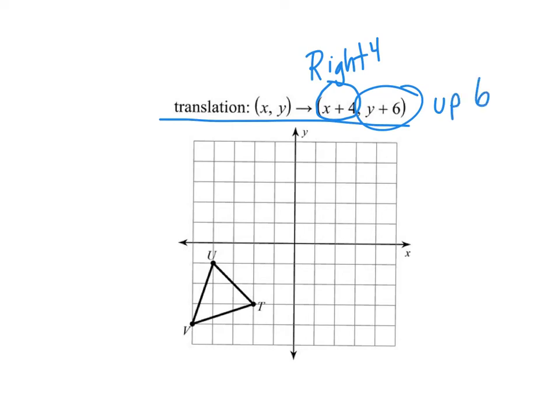So again, each point, we're going to go right 4 and up 6. So I'll start with T, 1, 2, 3, 4, 1, 2, 3, 4, 5, 6. And again, the part I like about this is once you understand the notation, it's just a matter of processing it and then counting. So I like that.